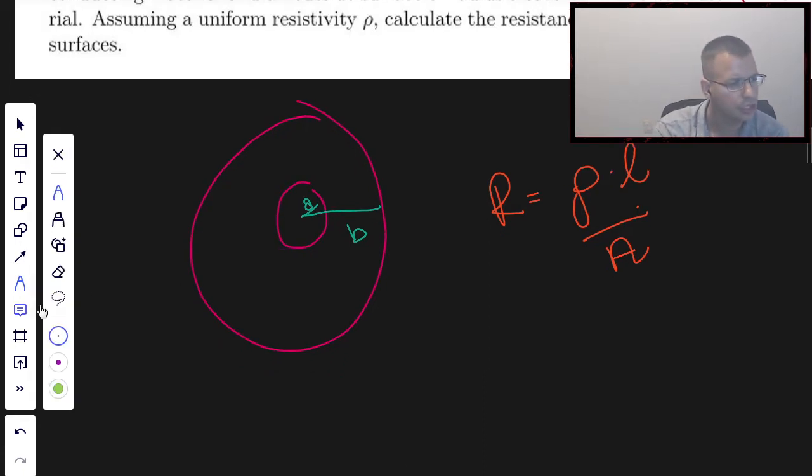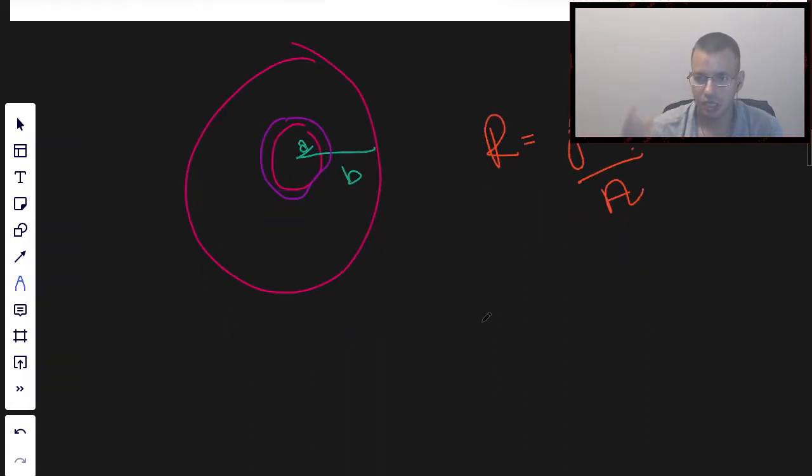We're going to look at this as a whole bunch of planes, sort of, disks. So I'm going to start with this inner loop right here, and I'm going to cut it and then flatten it out.